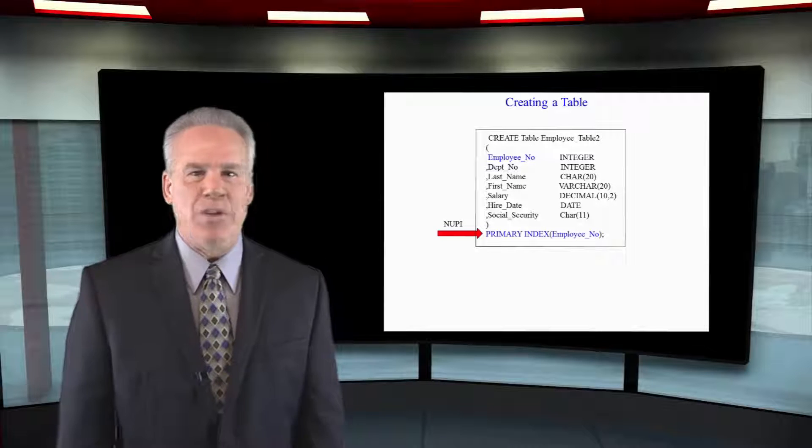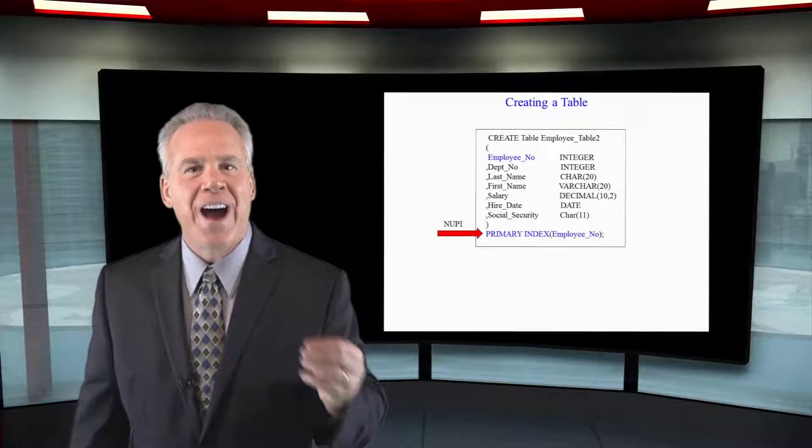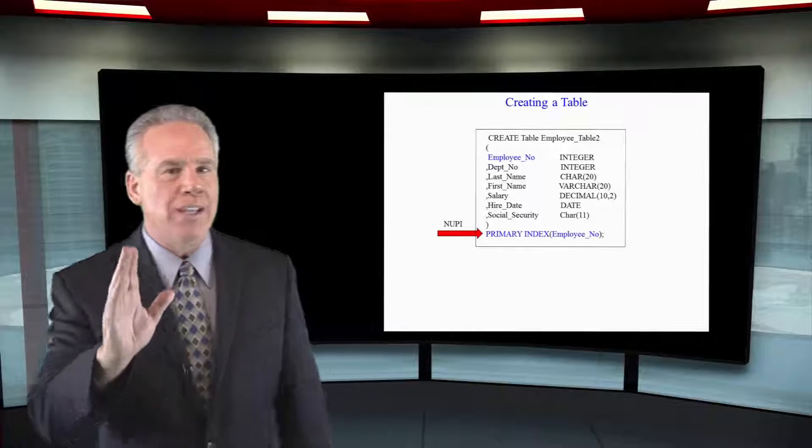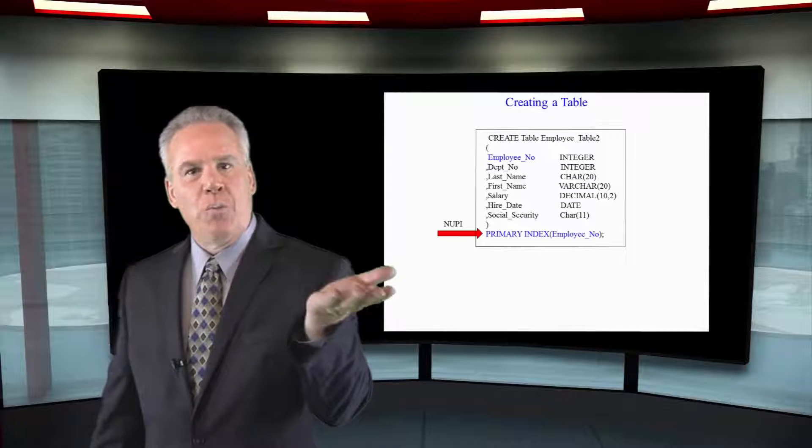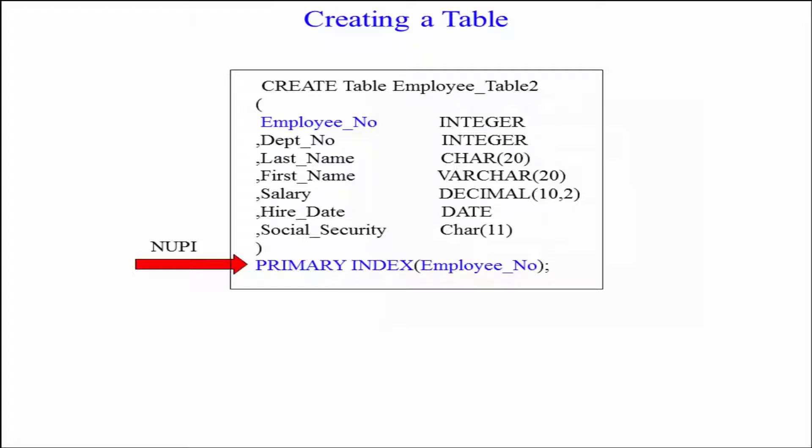We just saw a table with a unique primary index. This is a table with a non-unique primary index. So whenever you create a table, you can only give it one primary index and it's either a UPI unique primary index or a NUPI non-unique primary index.